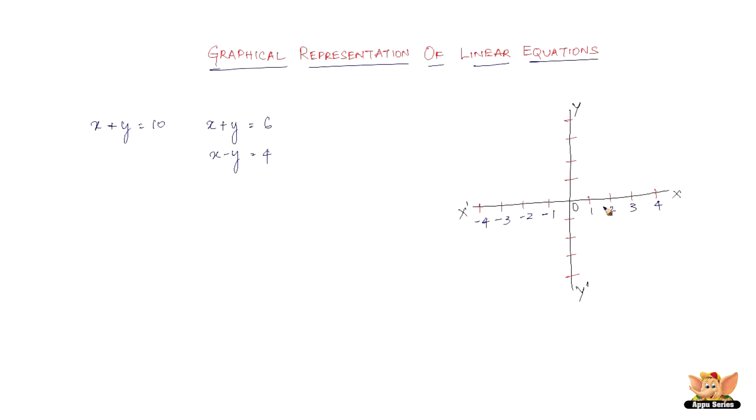On the right side of the y-axis, the x-axis is positive, and on the left side it is negative. Similarly, if you consider the y-axis, on the top is the positive side (1, 2, 3, 4) and below is the negative side (minus 1, minus 2, minus 3, minus 4).